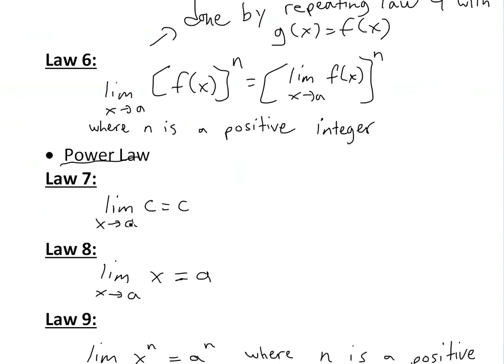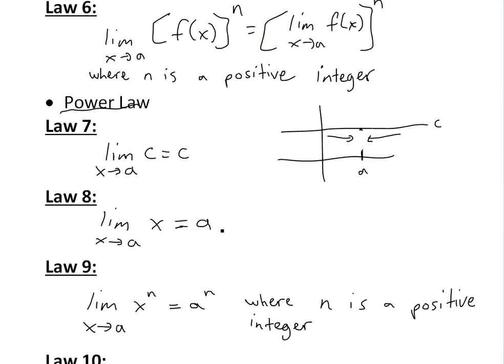If you have a limit of just a constant c as x approaches a, you're just going to get c here. You can see that visually if you have just a constant. Let's say this is c. And this is, let's say, a here. As you're approaching it, you're always going to stay on c here. But the more explicit proofs, I'll show these in later videos as well.